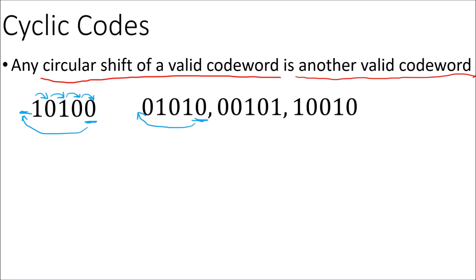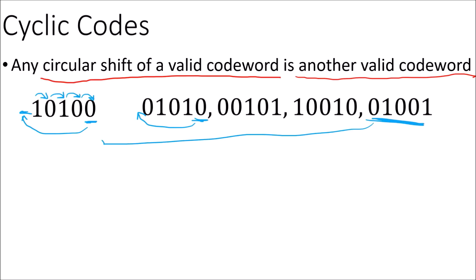And doing circular shifts repeatedly, we get additional codewords, and a circular shift of the last codeword brings us back to where we started with the original codeword. So with these five valid codewords, since every circular shift of a valid codeword gives us another valid codeword, this set of valid codewords satisfies the definition of a cyclic code.